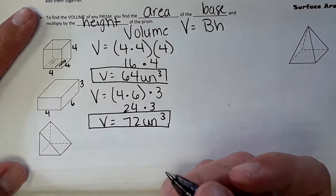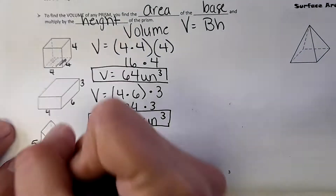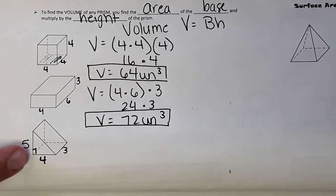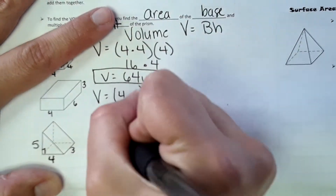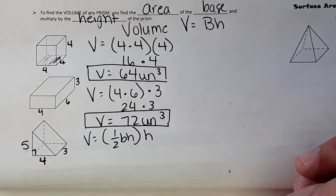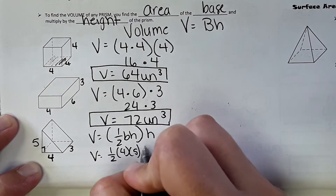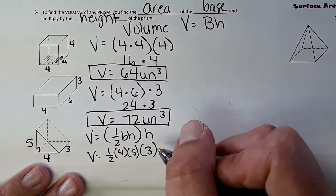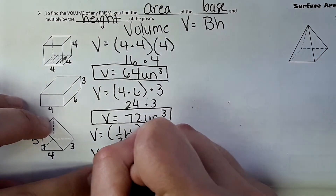For a triangular prism with dimensions 5, 4, and height 3 — assuming a right triangle — the base is a triangle. The area of a triangle is one-half base times height, so Volume = ½ × 4 × 5 × 3. Half of four is two, times five is ten, times three is 30. Volume = 30 units cubed.